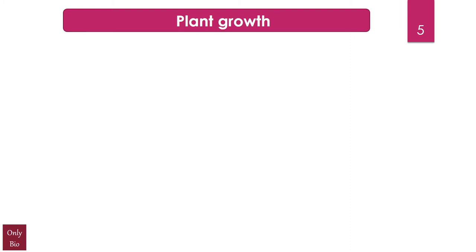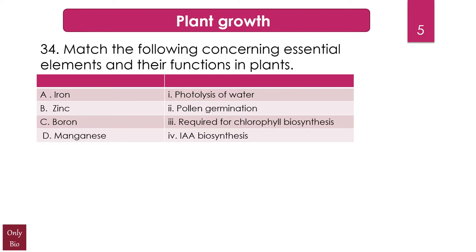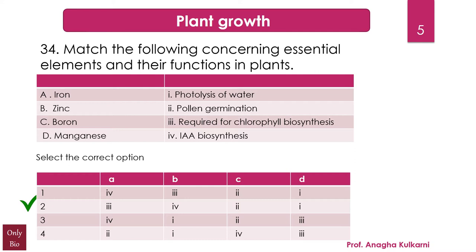The next question relates to the chapter Plant Growth: match the following. Column 1: iron, zinc, boron, manganese. Column 2: photolysis of water, pollen germination, required for chlorophyll biosynthesis, IAA (indole acetic acid) biosynthesis. The correct answer is: iron — required for chlorophyll biosynthesis; zinc — required for IAA biosynthesis; boron — needed for pollen germination; manganese — needed for photolysis of water.